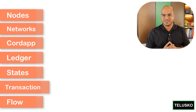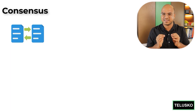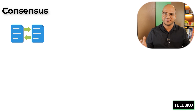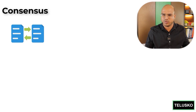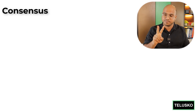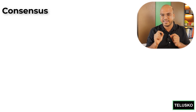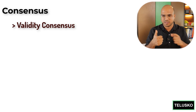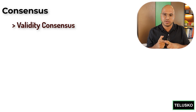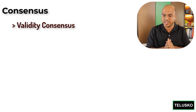We have talked about nodes, network, Corda apps, ledger, state, transactions, and flow. Now we are left with two important things. The first one is consensus. We are talking about blockchain and haven't talked about consensus yet. Since it's a permissioned blockchain, all nodes are known, so we don't have to verify the nodes. But we do need to validate transactions — that's called validity consensus. For validity, the transaction has to be signed by everyone and must match all the contracts and constraints.